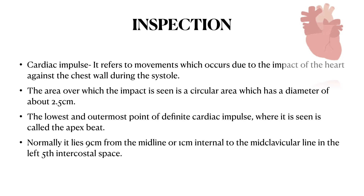Then you have to look for cardiac impulse. Cardiac impulse refers to movements which occur due to the impact of the heart against the chest wall during systole. The area over which the impact is seen is a circular area with a diameter of about 2.5 cm. The lowest and outermost point of the definite cardiac impulse is called the apex beat. Normally it lies 9 cm from the midline, or 1 cm internal to the midclavicular line, in the left 5th intercostal space.